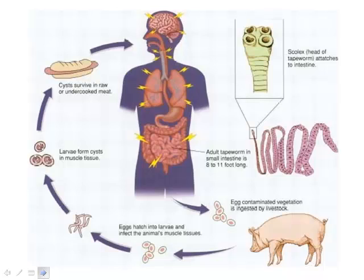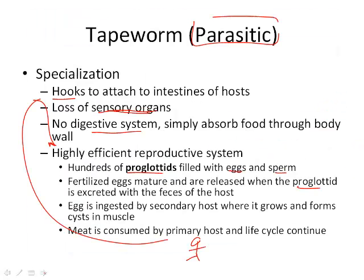Here's the tapeworm life cycle using two different hosts. Adult tapeworms are in our system; their eggs get into livestock through ingestion. In the pig, the organism infects muscle cells, regenerates, and produces larvae. If the meat we eat is undercooked, the cysts survive and enter our system, where they begin to reproduce — creating those long tapeworms — which then go back into pigs again, completing the cycle. Pause and get that down; we'll go over this in detail in class. Have a wonderful night.